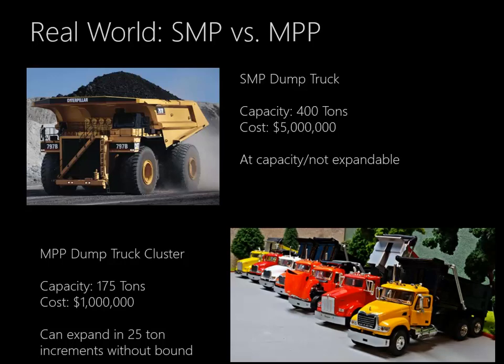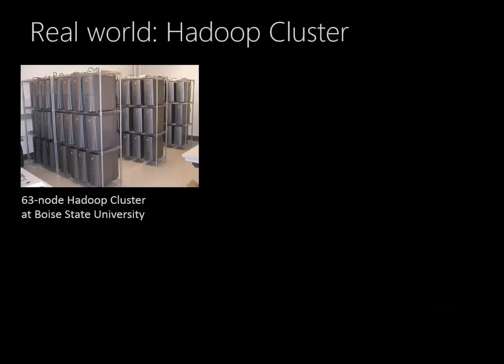The alternative to my SMP dump truck would be a cluster of dump trucks — an MPP dump truck cluster. This cluster of seven dump trucks at 25 tons each can move 175 tons, and the seven together would cost about $1 million. If I double that to 14 dump trucks, I can move about 350 tons of coal for about $2 million. So in aggregate I'm still spending less than I would on the very large dump truck. The same basic economics apply to Hadoop clusters.